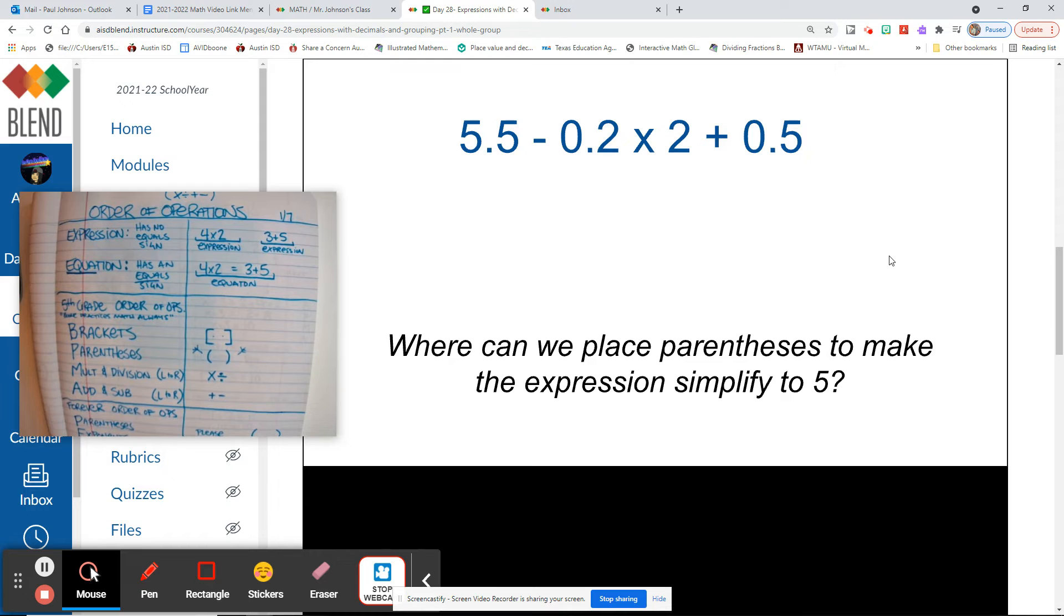Alright, so on this one, they do not have parentheses right now. Somewhere in this problem, we can place one set of parentheses. When we place that set of parentheses, the answer to this problem will magically change to 5. When we simplify our expression, it will turn into 5. So what I want you to do is I want you to think really hard. Go ahead and pause the video once I tell you to. Think really hard about where you could put one set of parentheses around which two numbers to make this expression simplify to 5. Alright, so go ahead and pause it.